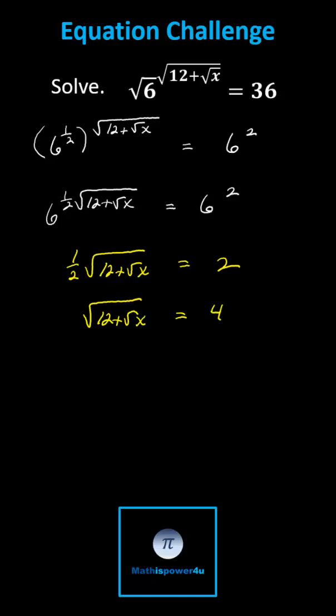To undo the square root, we square both sides of the equation. Squaring undoes the square root, giving us 12 plus the square root of x equals 16.